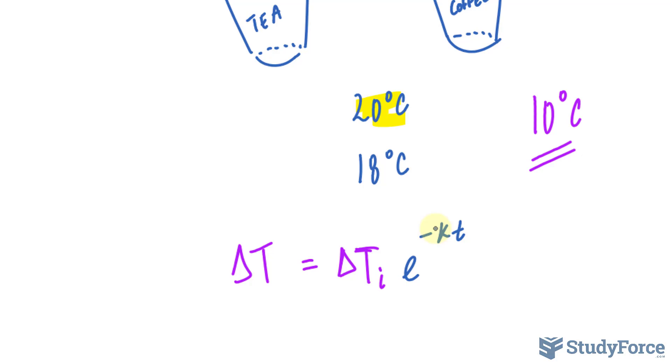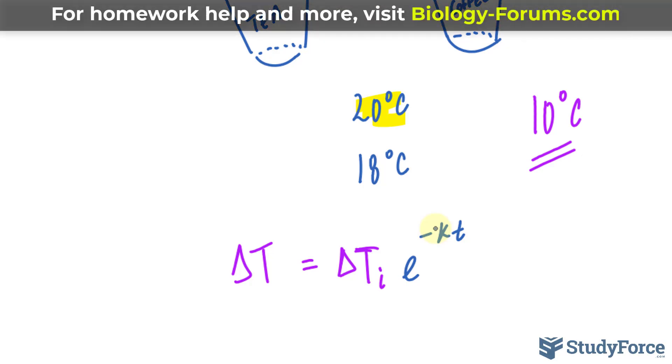K is a constant, and that constant will change depending on where these two beverages are being placed. So if you're placing these two beverages in a freezer, that constant will be different than if you were to place these two beverages on a table outside. Multiply to the time, and that's represented by the letter T.